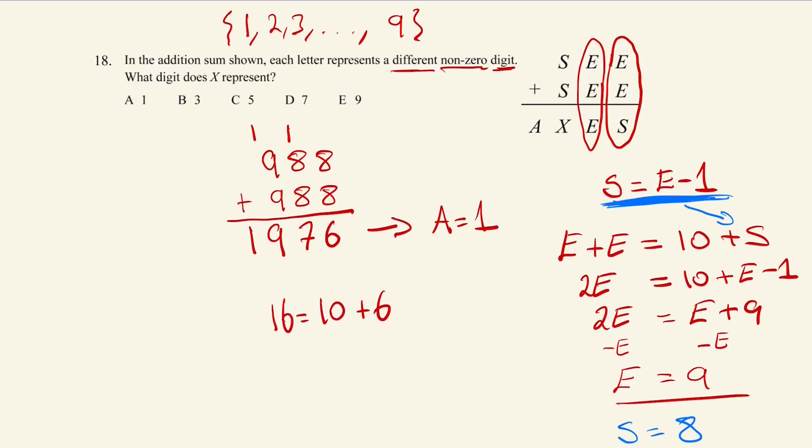So all we're going to do here is just rewrite this equation with S and E. So this is going to be 899 plus 899. Nine plus nine is 18, so carry the one. One plus nine plus nine is 19, carry the one. One plus eight plus eight is 17. And therefore what does X equal? What's this value here? Which is 7.